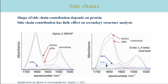The arginine contribution is visible in the right spectrum, while aspartate and glutamate contribute more to the left spectrum. Thus, proteins with different side chain compositions will have different side chain spectra. However, the absorption of side chains does not impose a severe problem for secondary structure analysis, and a subtraction of the side chain spectrum has little effect on the obtained result.